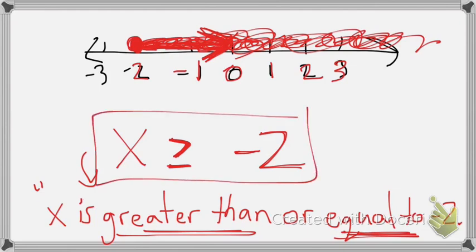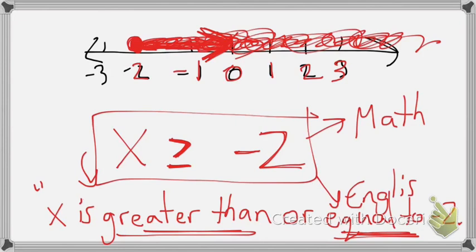So now, this inequality, this is in mathless. That's in English. But they mean the same thing. And the number line, this is a graph. So, we have a graph, we have an inequality, a mathless inequality, and we have a sentence written in English that are all showing the same thing.